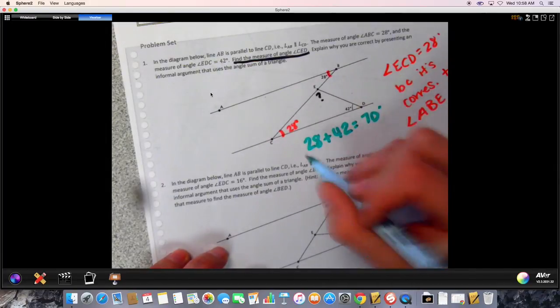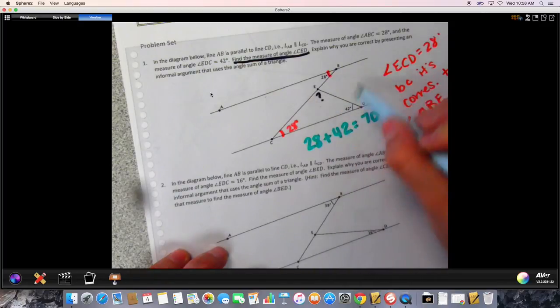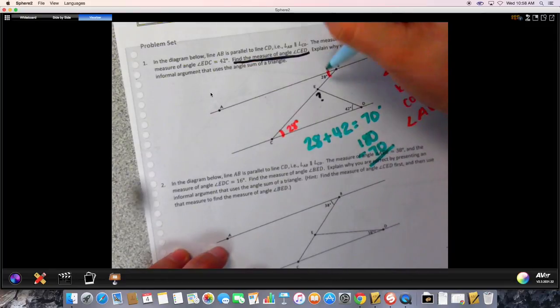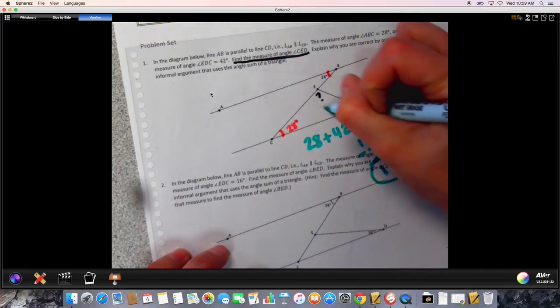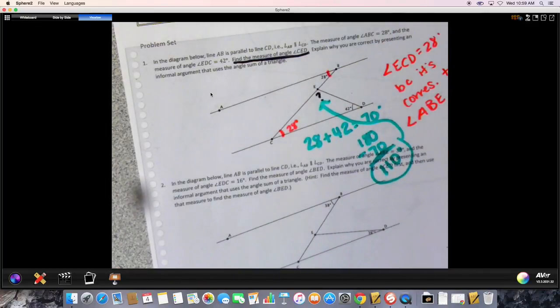If the whole thing is 180, we can do 180 minus 70 degrees, and that should give us our angle measure that we're looking for. So 180 minus 70 is 110 degrees, and that's our angle measure that goes right there because triangles equal 180 degrees.